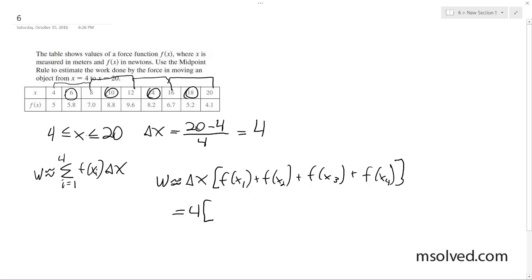And what we end up with is 4 times, so our points are circled here, so we multiply it times these. It's midpoint.